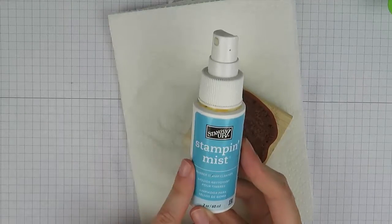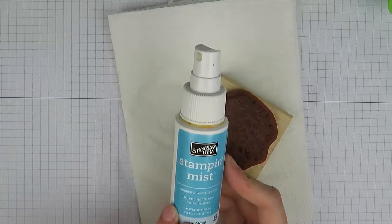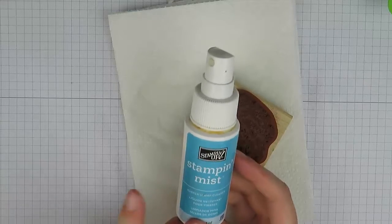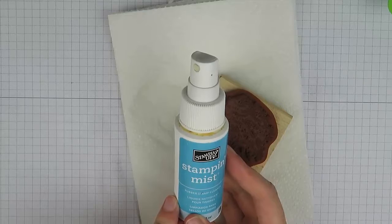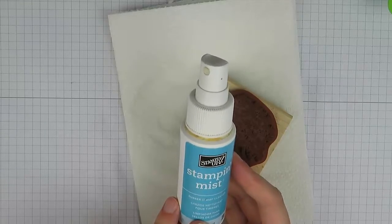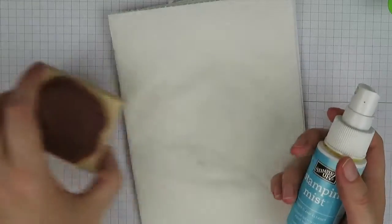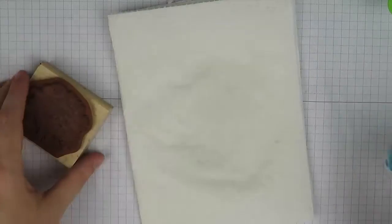So a better choice than water is to purchase some sort of stamp cleaning solution like Stampin' Mist. These not only clean better, but they actually have a product in here that will condition your stamp as well. So it's the same way: you just spritz this onto your paper towel and then clean your stamp.